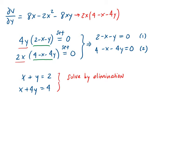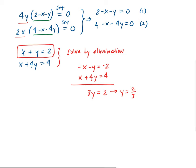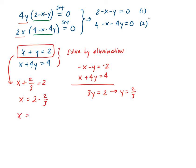Using elimination, multiply equation 1 by −1: −x − y = −2. Adding this to equation 2 (x + 4y = 4) gives 3y = 2, so y = 2/3. Substituting back into equation 1: x + 2/3 = 2, so x = 4/3.